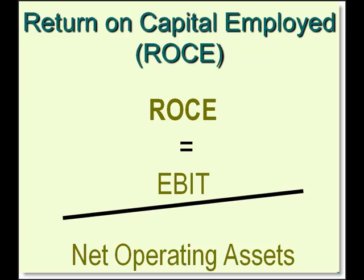Isn't it really simple? Let's do more of the top with less of the bottom. In other words, all we need is more Earnings Before Interest and Tax with less net operating assets — and that is the key formula towards our financial performance discipline.